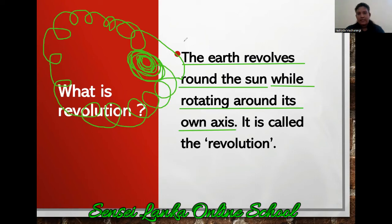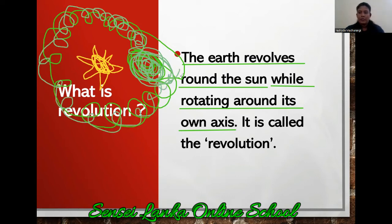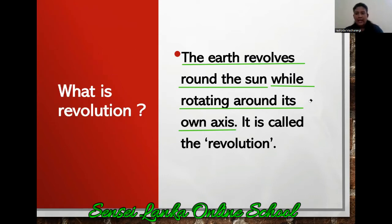While rotating around its own axis, the earth is moving around the sun like this. In the middle there is the sun. The earth is spinning over itself while going around the sun. This is the revolution. The earth revolves around the sun while rotating around its own axis — it is called the revolution.